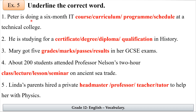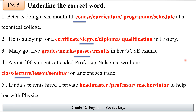Exercise five: underline the correct word. Peter is doing a six-month IT course — a series of lessons — at a technical college, so the answer is 'course.' He's studying for a certificate or degree in history — the answer is 'degree.' Mary got five passes in her GCSE exams — successful results — so the answer is 'passes.' About 200 students attend Professor Nelson's two-hour lecture on ancient sea trade — as the professor works in a university — so the answer is 'lecture.'